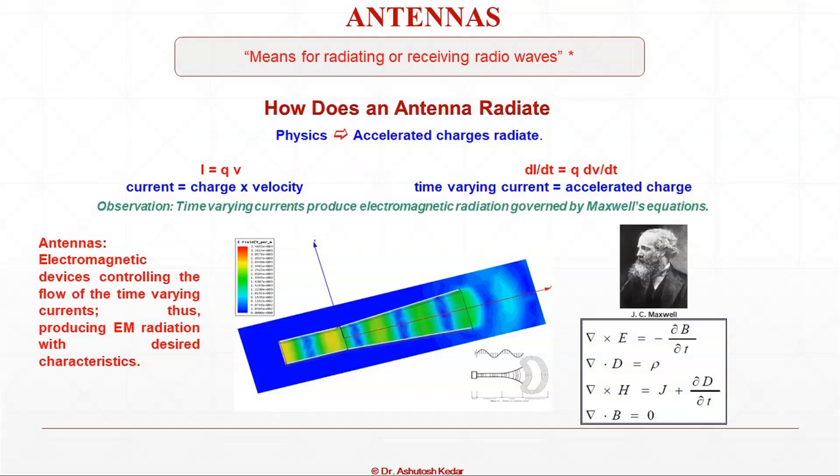Let us start with the basics. What is an antenna? An antenna is a means for emitting or receiving radio waves. Any accelerated charges radiate. Any time-varying current will be equal to the accelerated charges, and those time-varying currents produce electromagnetic radiation governed by Maxwell's equations postulated by J.C. Maxwell.